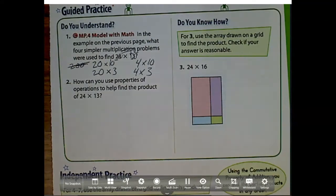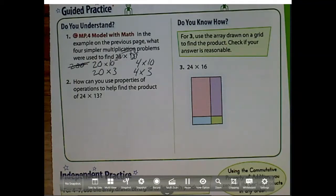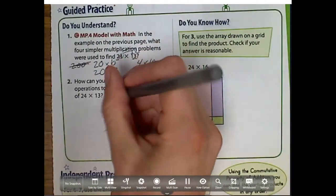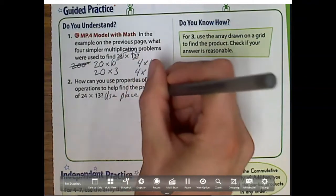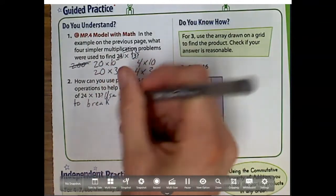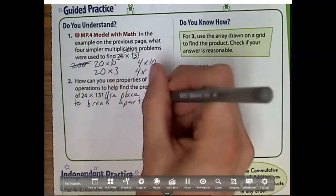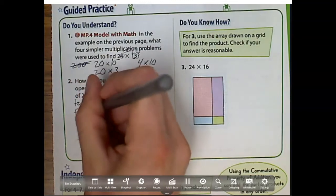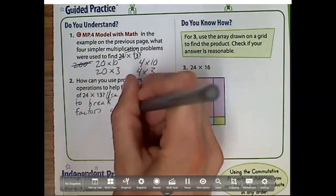But if we solve them and add all those partial products together, we would see that we would get the same answer that we did on the previous page. Question number two says, how can you use properties of operations to find the product of 24 times 13? So what I'm going to do is use place value to break apart the factors and add.